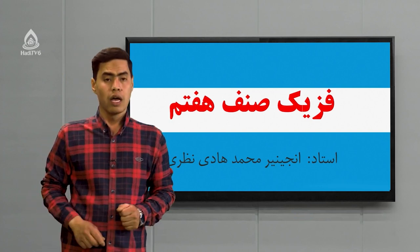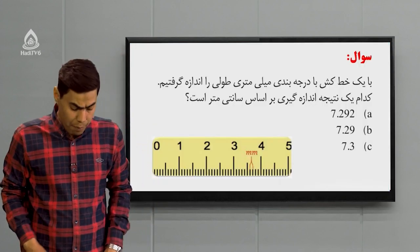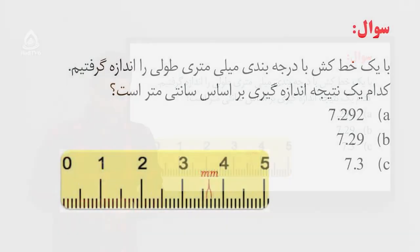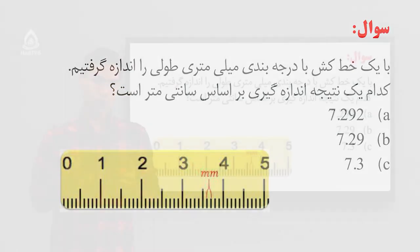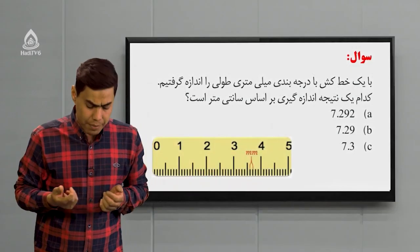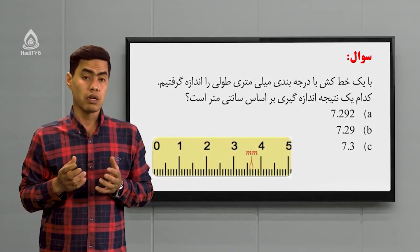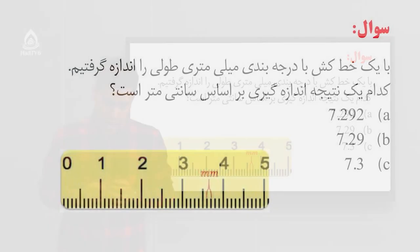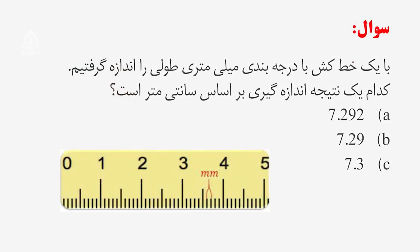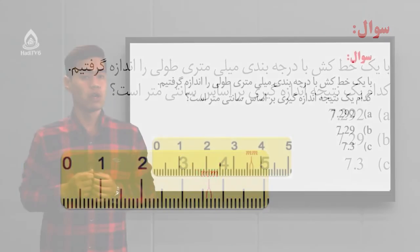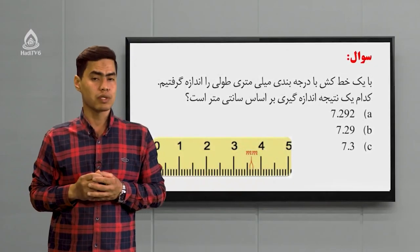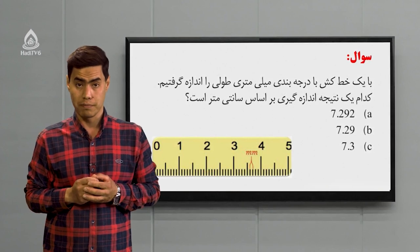مثال چی گفته؟ گفته با یک خطکش با درجه‌بندی میلیمتری طولی را اندازه گرفتیم. حالا کدام یک از نتایج اندازه‌گیری بر اساس سانتیمتر می‌تانه باشه؟ گزینه الف: هفت اشاره دو، ب: هفت اشاره نود و دو، ج: هفت اشاره سه. شاگرد عزیز، کدام یک از گزینه‌ها صحیح می‌تانه باشه؟